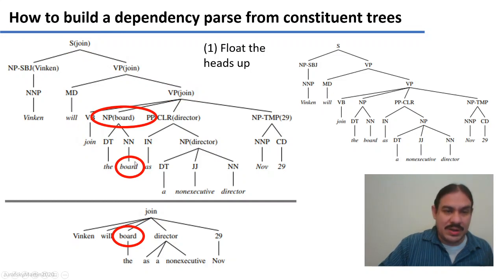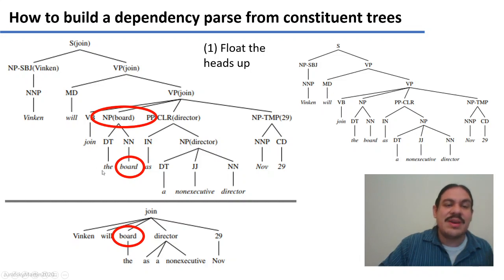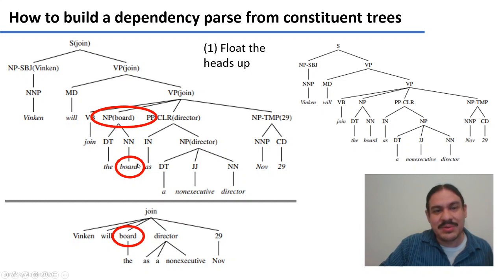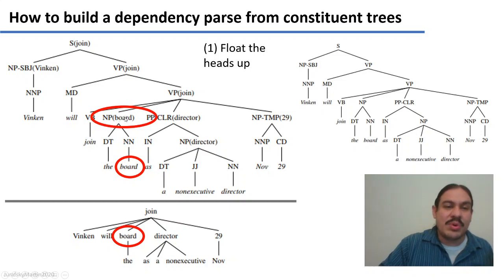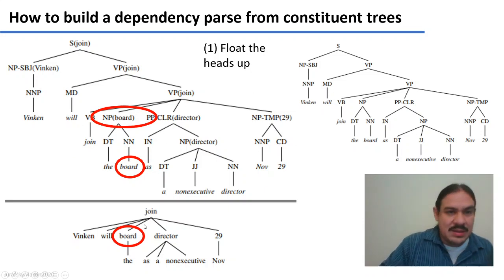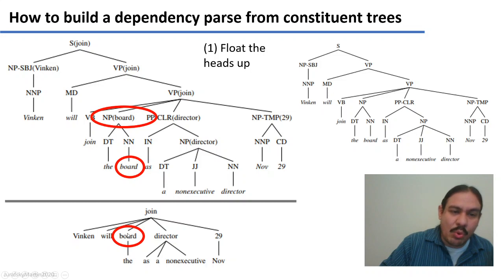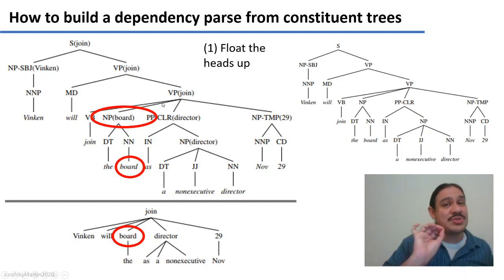We can do the same with other words. For example, 'board' is floated up to its noun phrase because it's the head of that noun phrase. In the phrase 'the board', 'board' is the head because we're talking about a kind of board. However, 'board' is not the head of the verb phrase — the head of that is 'join' because it's about joining something. So 'board' cannot float further up, and we establish an arc with 'join' as the head and 'board' as the dependent.